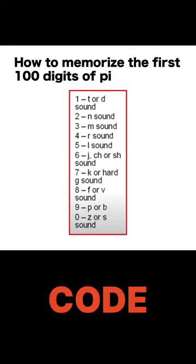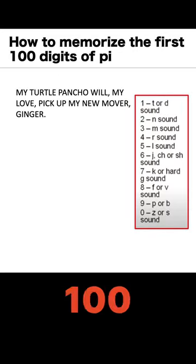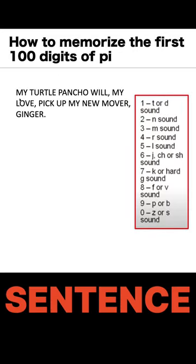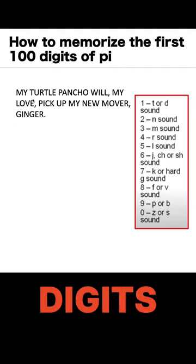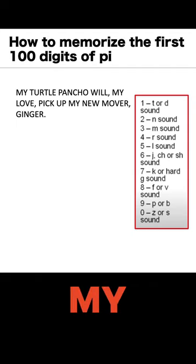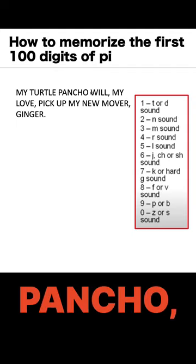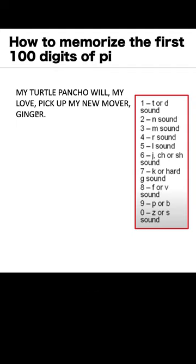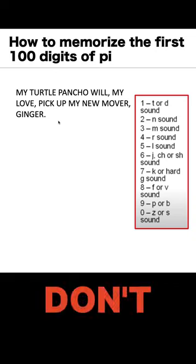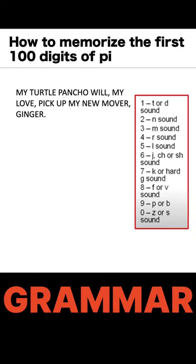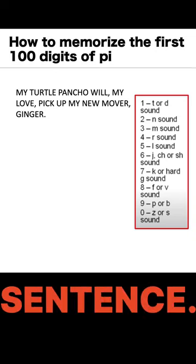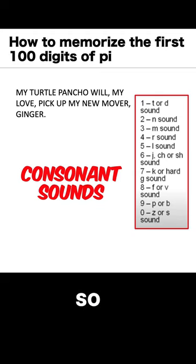Let's use this code to decode the first 100 digits of Pi. This sentence can be translated to the first 24 digits of Pi: 'My turtle Pancho will, my love, pick up my new mover, Ginger.' Now, don't pay attention to the grammar of the sentence. We are only after sound.